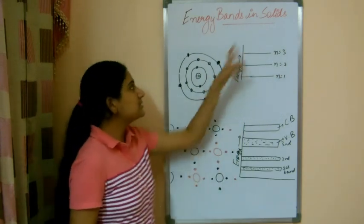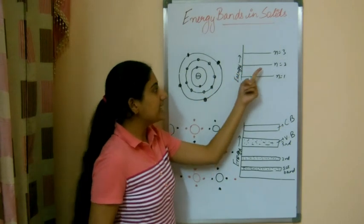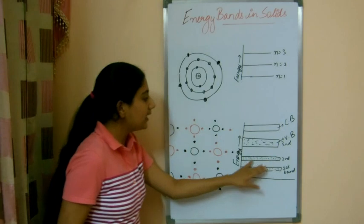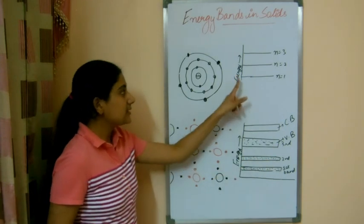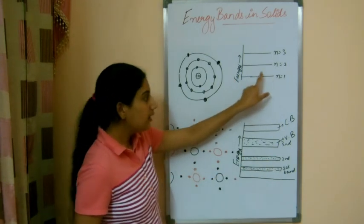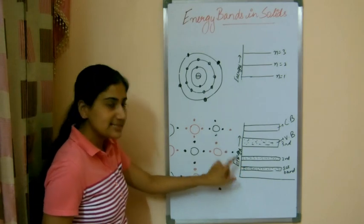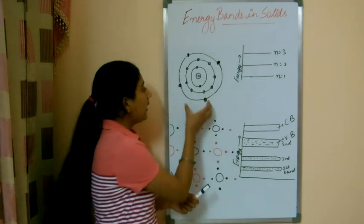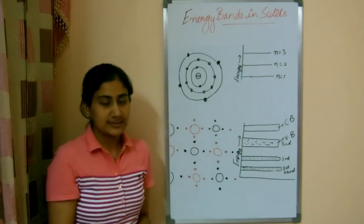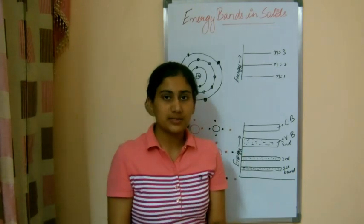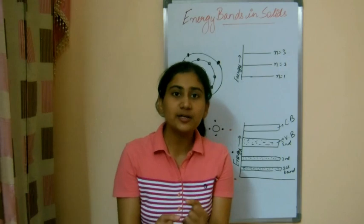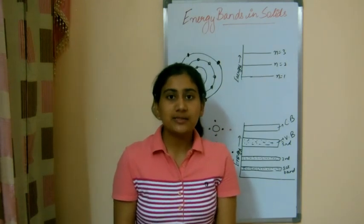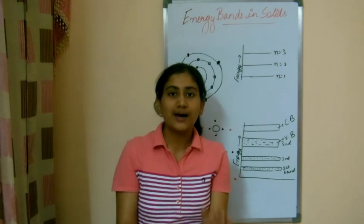What happens in solids is that these energy levels get converted to energy bands — a particular energy level widens itself into a band. In a solid, a particular atom is not present alone; there are a number of atoms present very close to each other, meaning each atom is under the influence of other atoms.